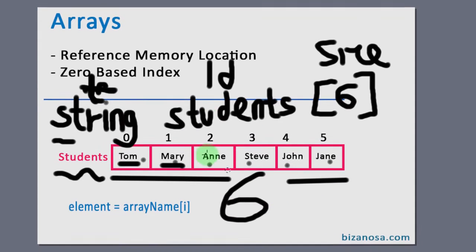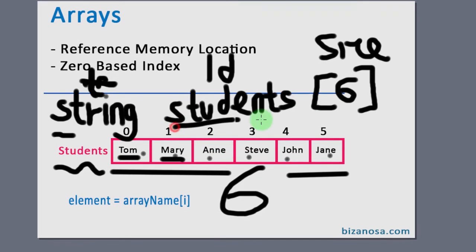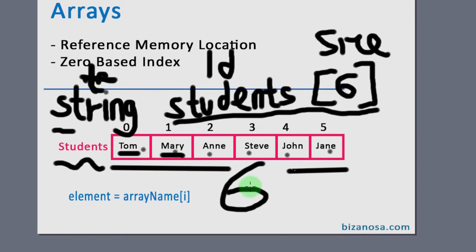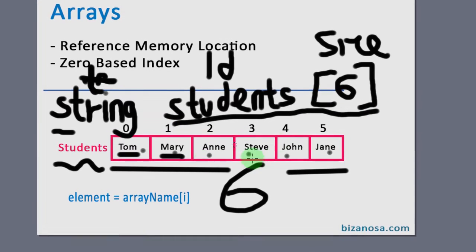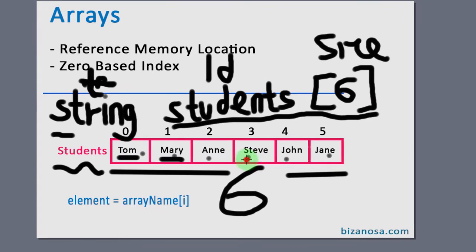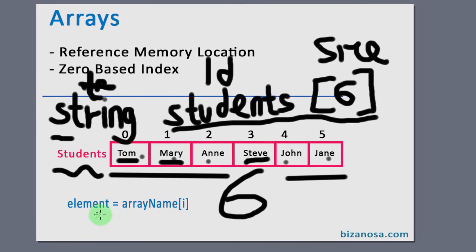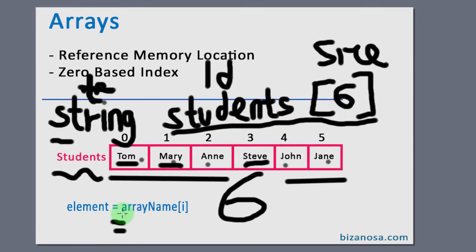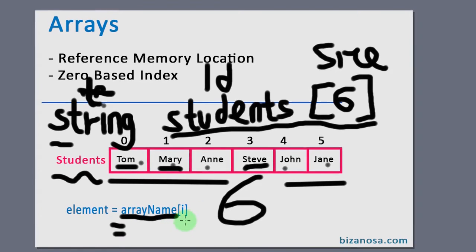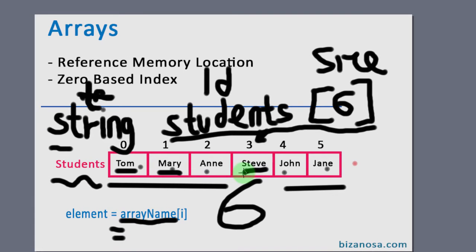And if you want to access our array, which is the students array that has six elements, you want to access any element here. Let's say you want to access Steve, you would use the array name,